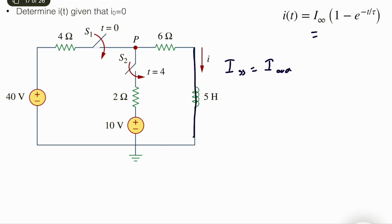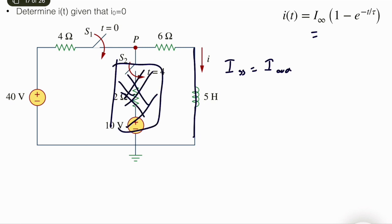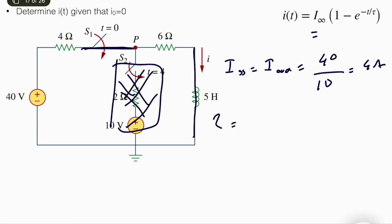i∞ is the steady state, happening when the inductor becomes a short circuit. The second switch is not activated so we ignore that part. The first switch is closed, giving a single loop circuit. i∞ equals 40 divided by the equivalent resistance, which equals 4 amps. The time constant tau equals L divided by R: L equals 5 henry, R equals 10 ohm, so tau equals 1/2 seconds.